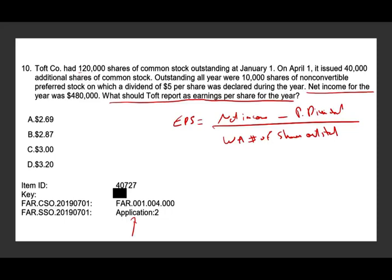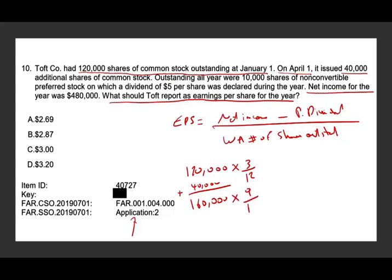T Company had 120,000 common shares outstanding on January 1st. On April 1st, it issued 40,000 additional shares. Outstanding all year were 10,000 non-convertible preferred shares on which $5 per share was declared during the year. So we had 120,000 shares outstanding for 3/12 of the year, then starting in April we had 160,000 shares outstanding for 9/12 of the year.